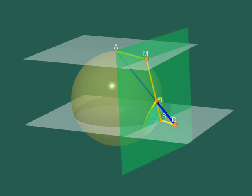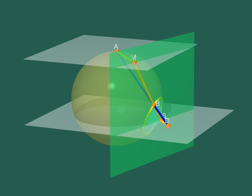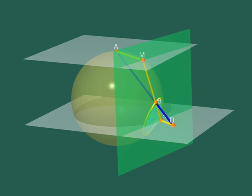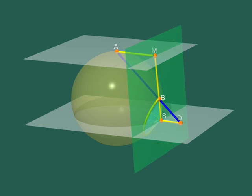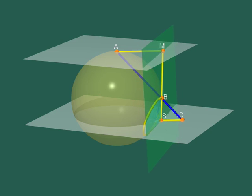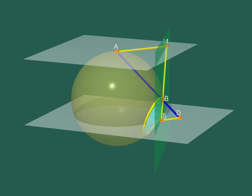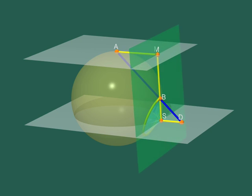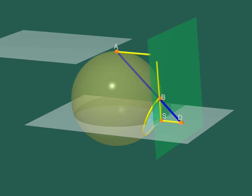When B moves along the yellow circle, the segment BS keeps tangent to the sphere. Its length is therefore constant. Since BS and DS have the same length, the moving segment DS also retains a constant length.